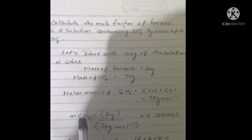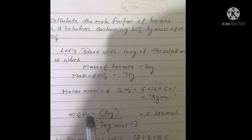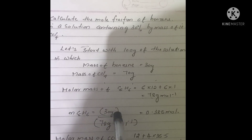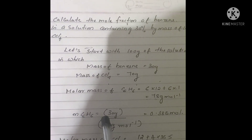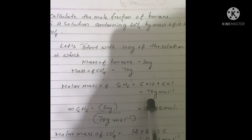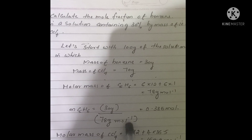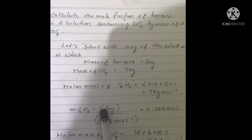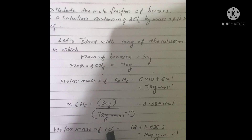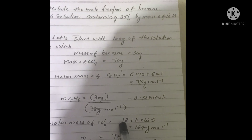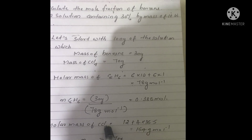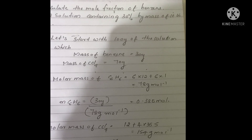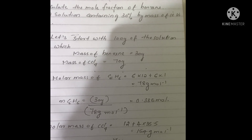Number of moles of benzene equals mass divided by molar mass — mass of benzene is 30 grams divided by molar mass of benzene, which is 78 grams per mole — giving 0.385 moles. Then molar mass of carbon tetrachloride equals 12 plus 4 times the atomic mass of chlorine (35.5), which equals 154 grams per mole.